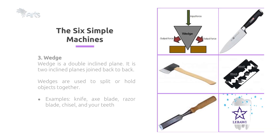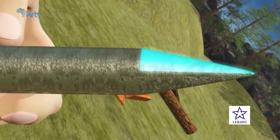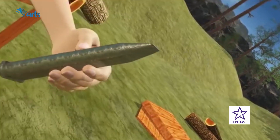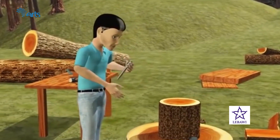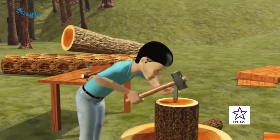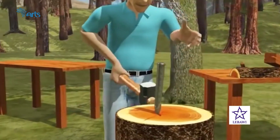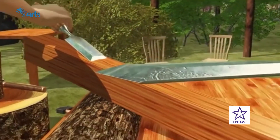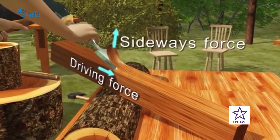The third type of simple machine is wedge. A wedge is a double inclined plane — two inclined planes joined back to back, as you can see from the diagram on screen. Wedges are used to split or hold objects together. We can take knife, axe blade, razor blade, chisel, and doorstops as examples of wedge.